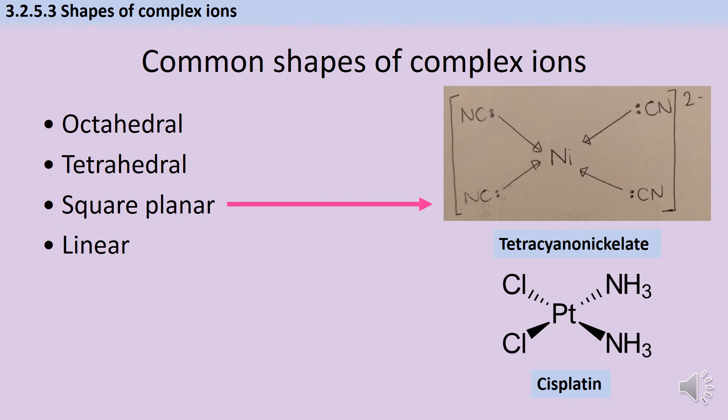Now, annoyingly, you can't just rely on the fact that there are four ligands to say that a complex ion is definitely tetrahedral because it could also be square planar.